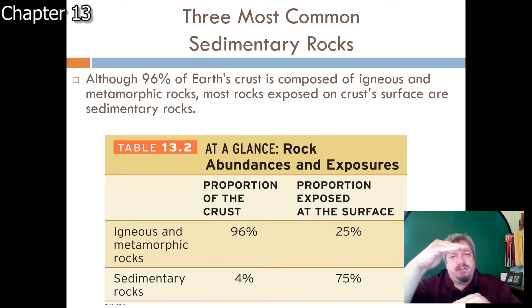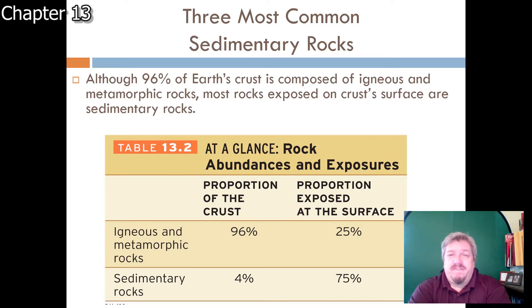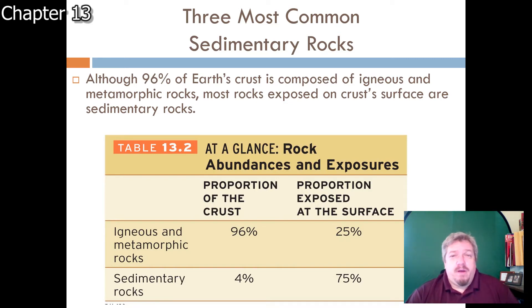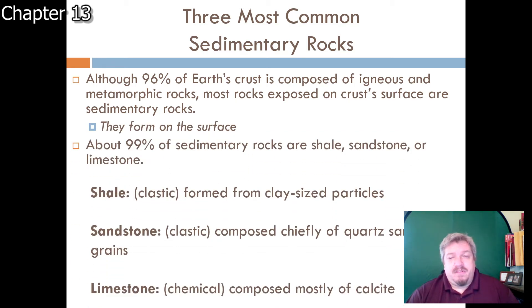If you look at the total amount of the crust - the first 20 miles - almost all of it is igneous or metamorphic rock; only four percent of the crust is made of sedimentary rock. But three-quarters of the actual surface is sedimentary rock, because igneous rocks form deep down in the Earth, metamorphic rocks need to be buried, and sedimentary rocks can only form on the surface in a depositional environment.